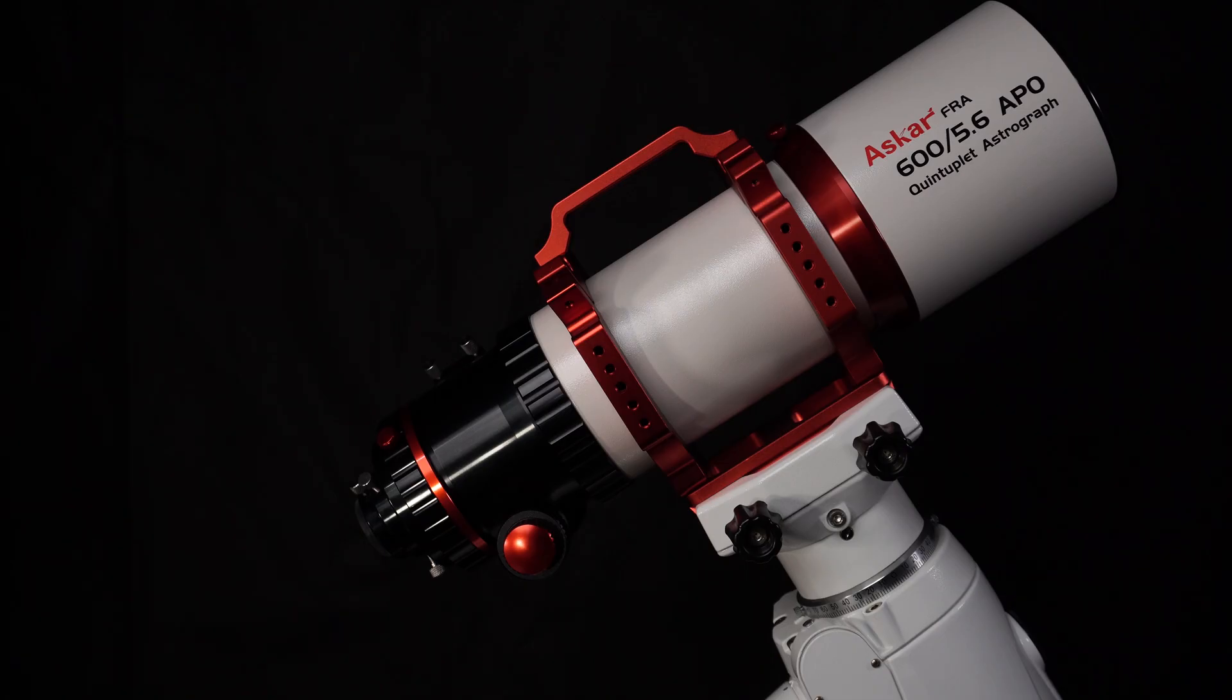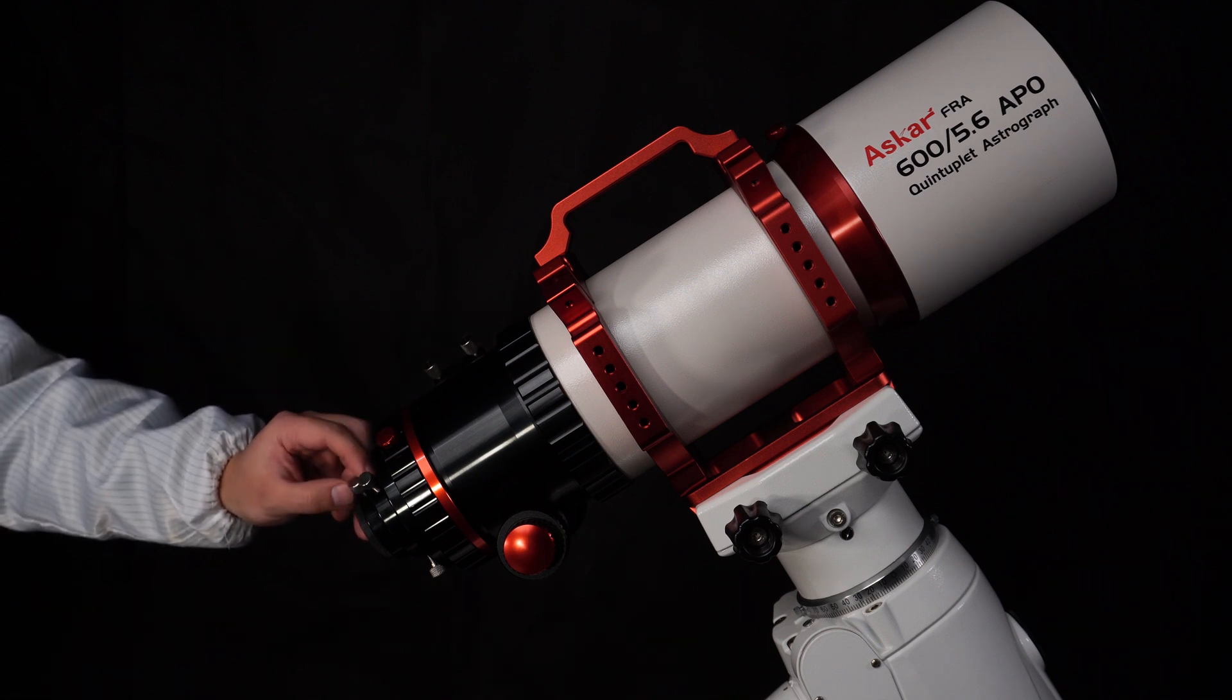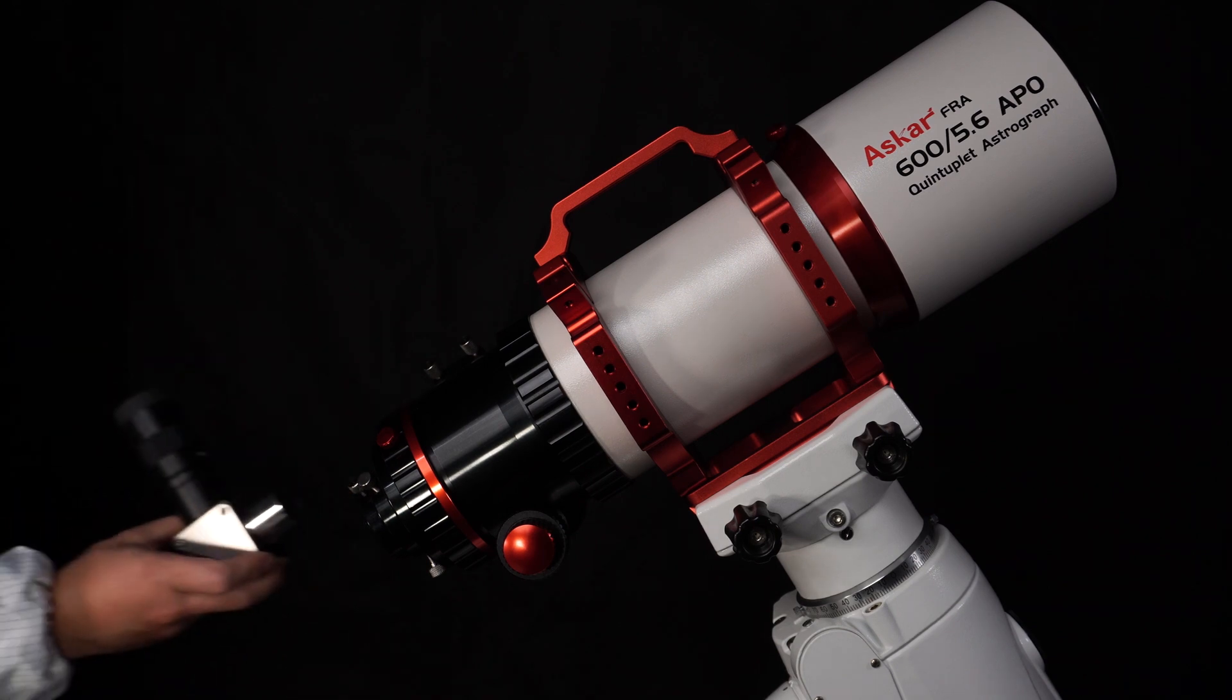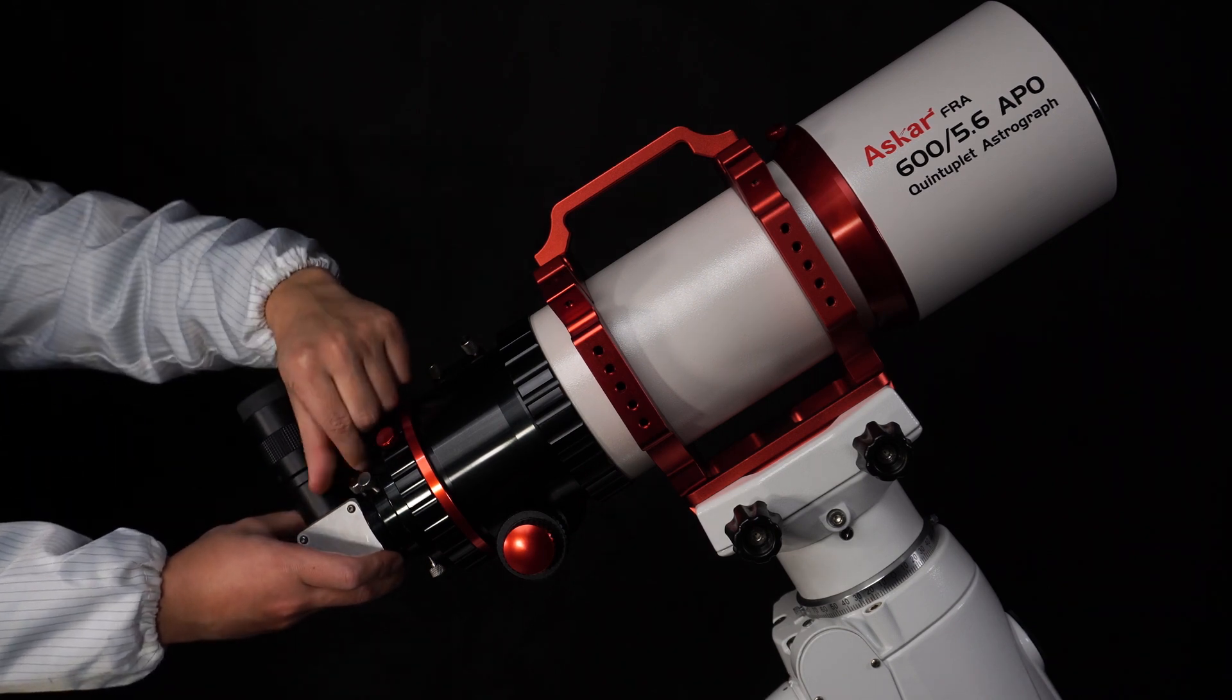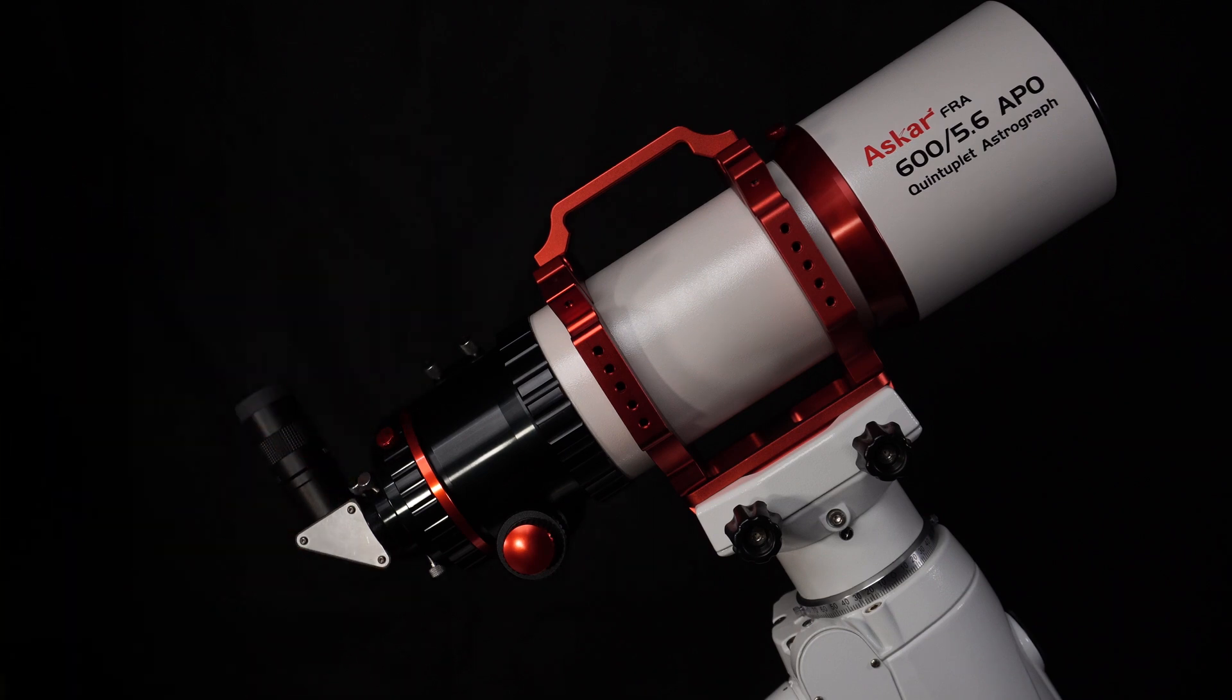And now install the eyepiece on the astrograph. First, unscrew and take off the 1.25-inch adapter cap. Insert the diagonal with a 1.25-inch eyepiece into the adapter. 2-inch eyepiece can also go with this astrograph.